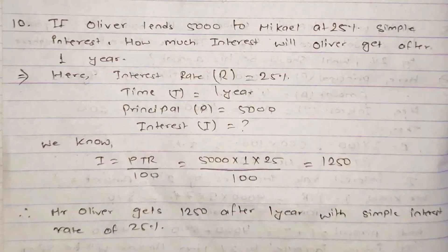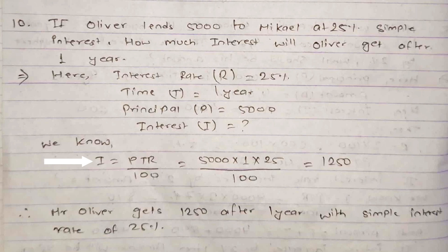Question number 10: Oliver lends 5,000 to Michael at 25% simple interest. How much interest will Oliver get after one year? Given: principal = 5,000, time = 1 year, rate = 25%. Using I = P × T × R / 100 = 5,000 × 1 × 25 / 100 = 250. Therefore Oliver gets 250 after one year at a simple interest rate of 25%.